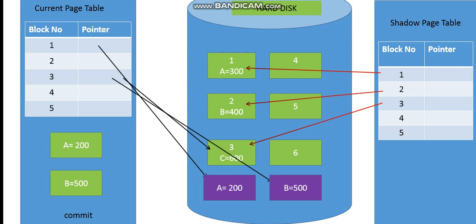After successful completion of the transaction, the current page table is pointing to the new free available blocks where the updated data is recorded. The shadow page table is still pointing to the old pages — block 1 and block 2 — where the original data was kept.